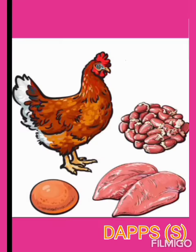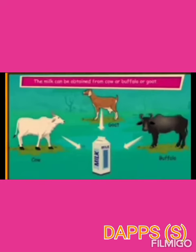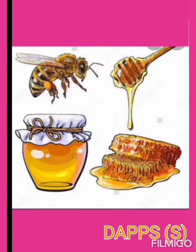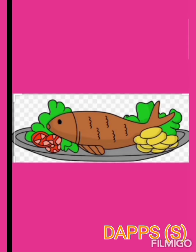Food that we get from animals: we get eggs and meat from hen. Some animals give us milk. Or isi dhudh se hum paneer, butter, cheese, ghee or curd banaate hain. We get honey from honeybees and we also use fish as food.